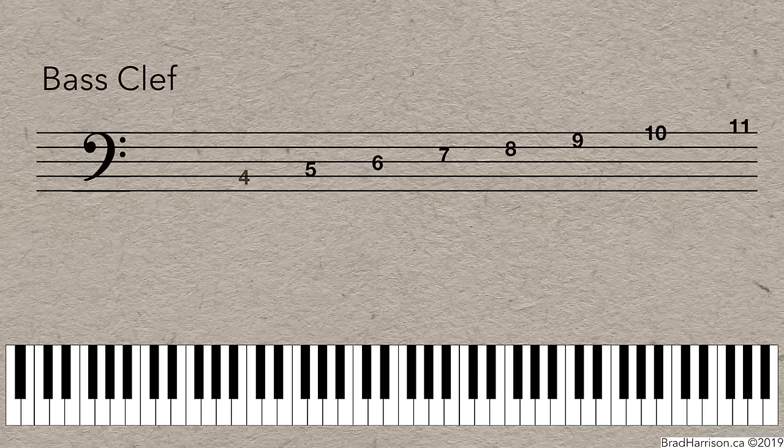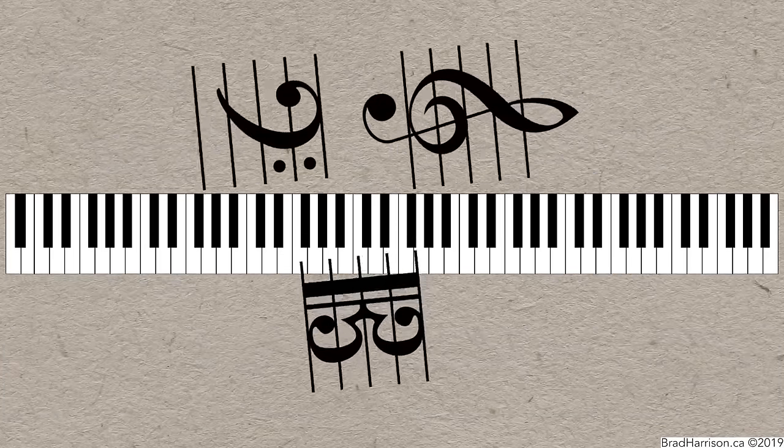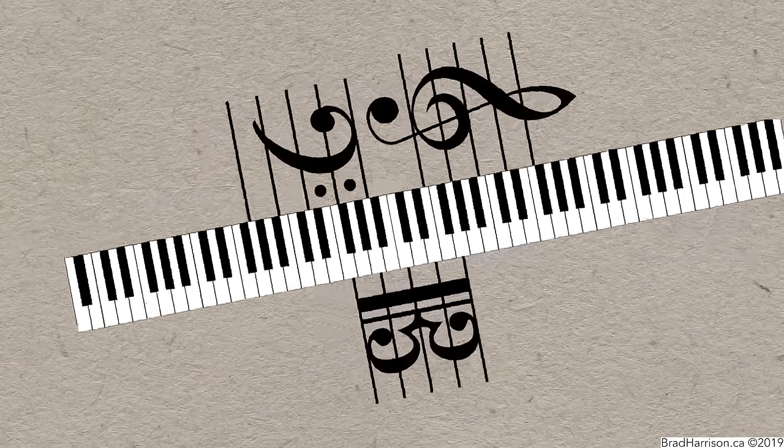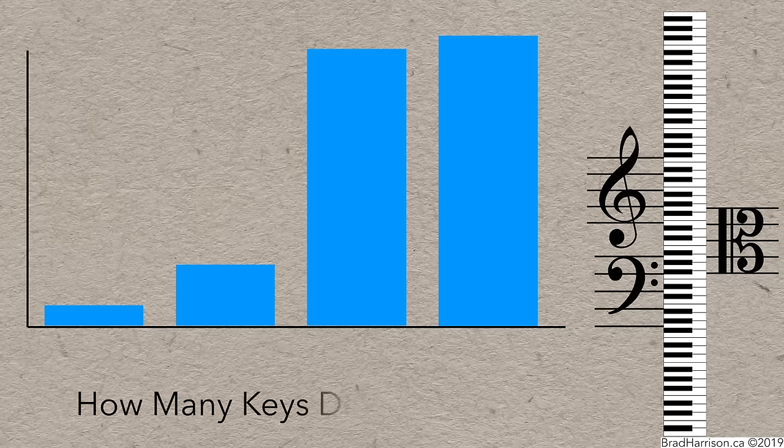We use a symbol called a clef. The purpose of the clef is to let us know what part of the piano the staff is actually referring to. It's kind of like how a graph doesn't really mean anything, unless we add labels to add context to the information displayed.